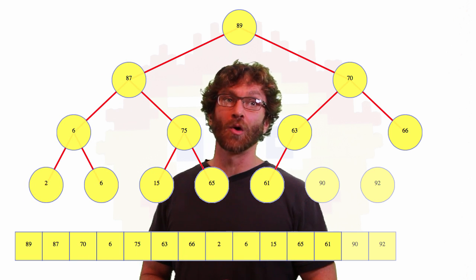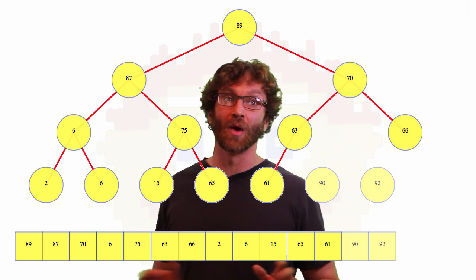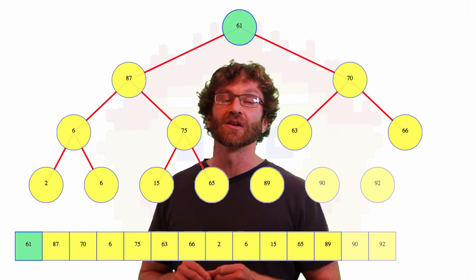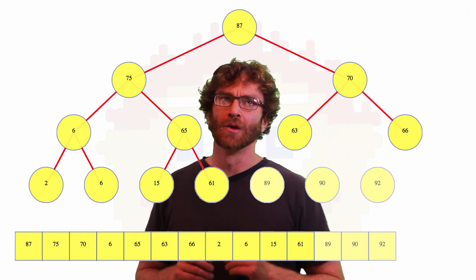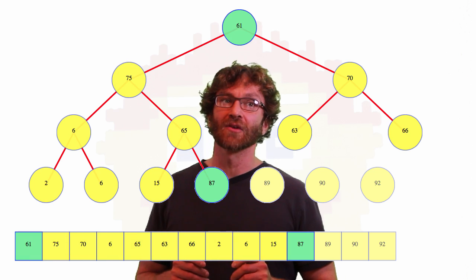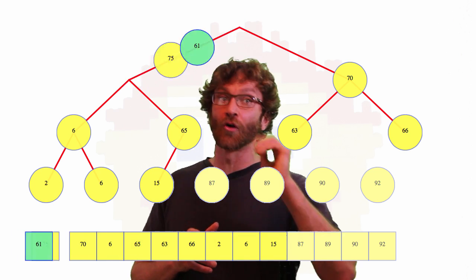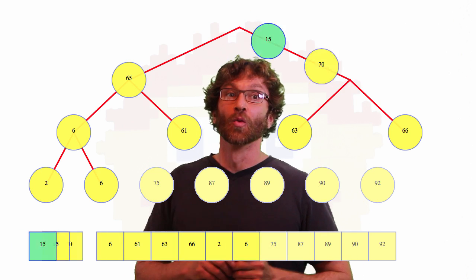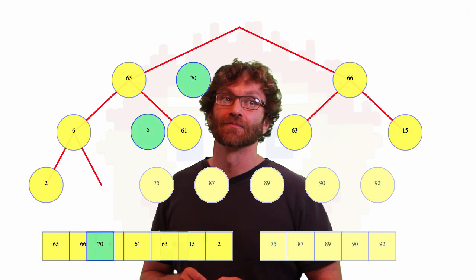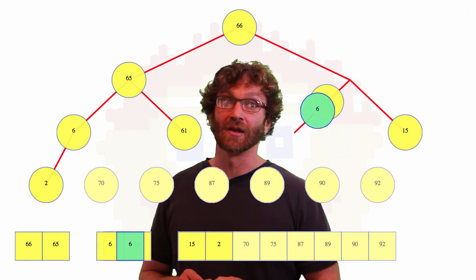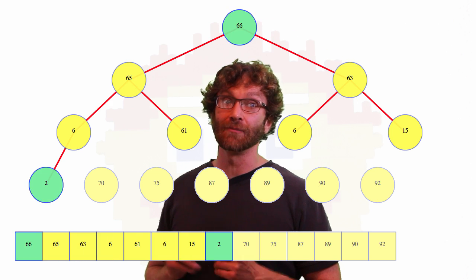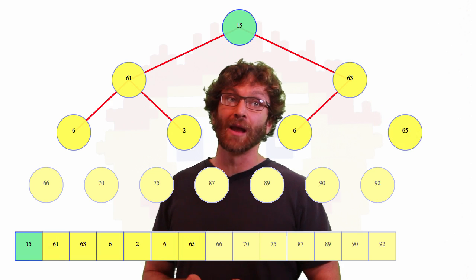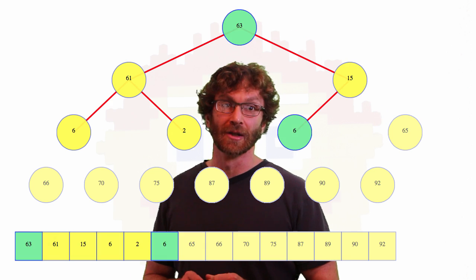To speed things up from here forward, I'm not going to show any more individual comparisons, but just the delete values until the heap is empty. Notice, when I call delete max, I don't just overwrite the value to be deleted. Instead, I swap it with the last leaf of the heap. That's how I showed delete max in the intro to heap video, and the only reason that I did it there was so that I could use the same version here.